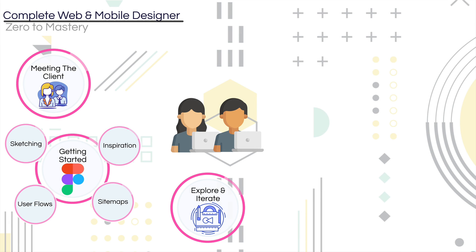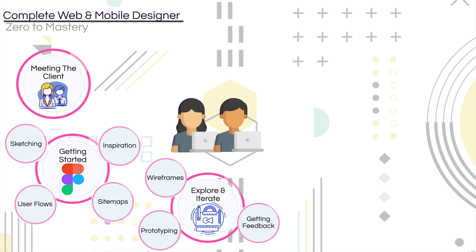Then we get into even more exciting things. This is the explore and iterate phase, where we talk about wireframes, prototyping, and getting feedback. We're going to start using Figma, which is a wonderful tool that more and more people are using now because things like Photoshop are kind of outdated when it comes to design. We want to use a modern tool like Figma that allows us to do everything we want and also makes our handoff later on when we finish the project super easy.